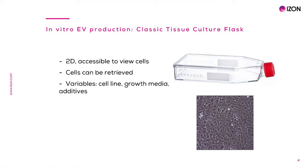The variables affecting cell growth in these flasks are type of cell line, cell density, growth media, and additives. To enhance cell growth, the most used additive in tissue culture is fetal bovine serum or fetal calf serum, in concentrations ranging from 2% to 20% in the culture media. This serum is obtained from cows and, like serum from any animal, contains a vast amount of EVs. Therefore, FBS EVs will substantially contribute to the EV population isolated from CCM when this supplement is used.